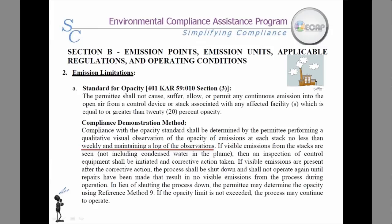Section 2 — emission limitations — is where you will find what the limitation is and how you are to prove that the limitation is being maintained. For example, a common limitation is an opacity limit or visual emissions limitation. The method of compliance for this unit is weekly observations and maintaining a log. Please note: if you are required to monitor it, then you should record it and it will need to be reported.